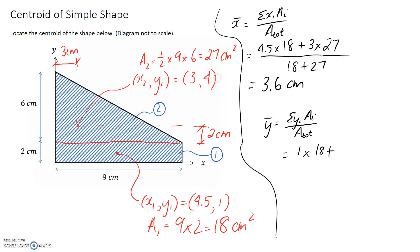Plus we need y2, which worked out to be 4, and the area, which worked out to be 27. We then need to divide by the total area, which again is going to be 18 plus 27, and we end up with a y-coordinate which is 2.8 centimetres.